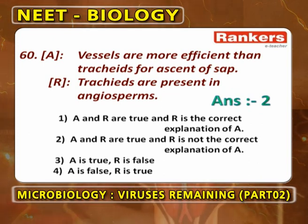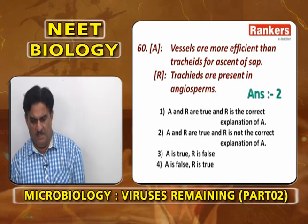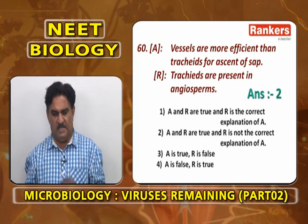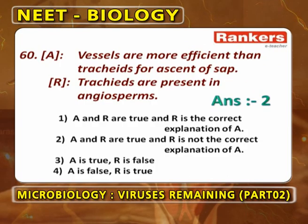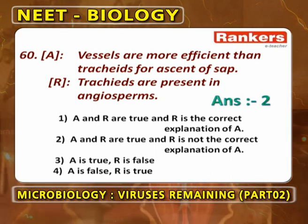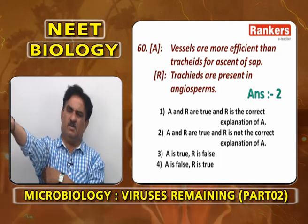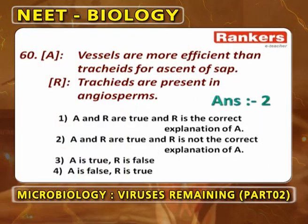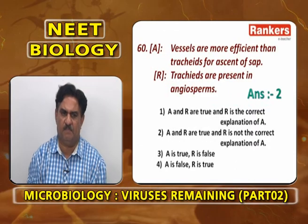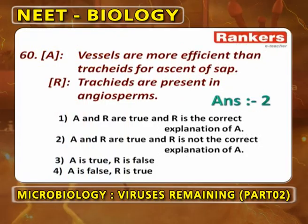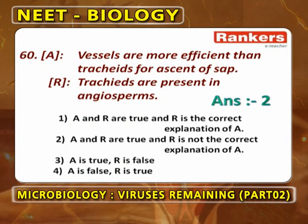Vessels are more efficient than tracheids in ascent of sap — this is proved. Tracheids are present in angiosperms (angiosperms also contain tracheids along with vessels). Vessels are efficient for ascent of sap is correct, and tracheids present in angiosperms is correct, but the presence of tracheids in angiosperms is not the reason vessels are efficient. So A and R are correct, R is not the correct explanation of A. Second option.